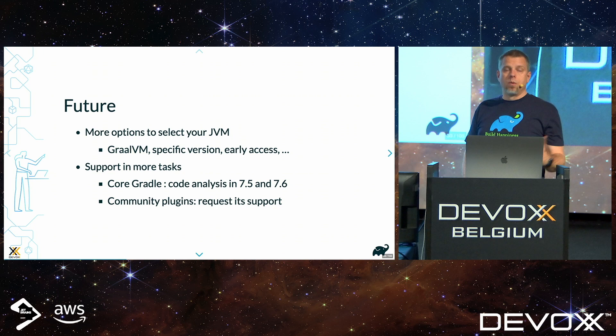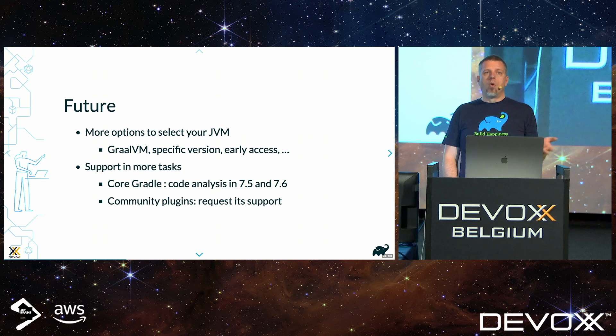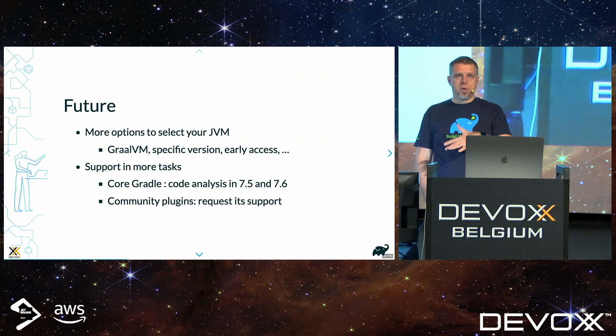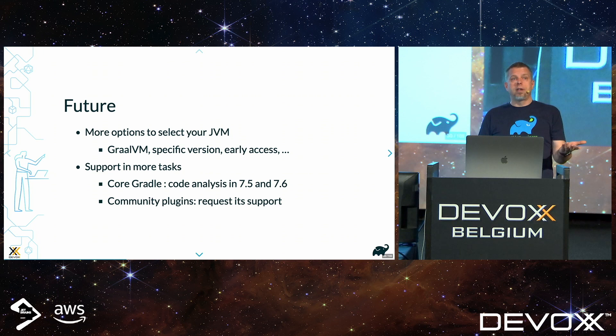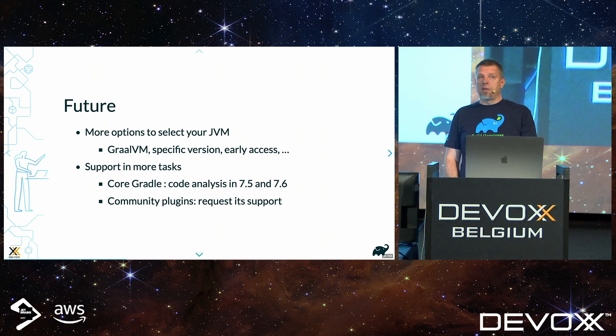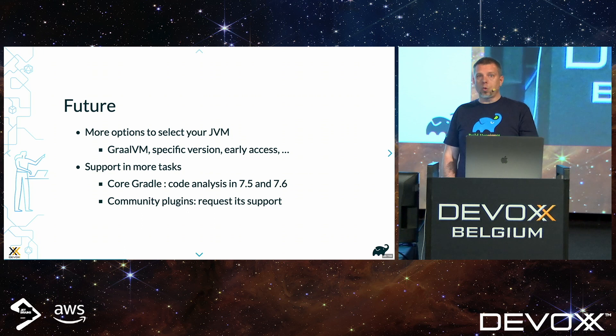In terms of the future: more vendor options. We're also looking at increasing toolchain support in tasks. For the core Gradle plugins we turned it on for CheckStyle in 7.5. We're turning it on for more code analysis core plugins in 7.6, to be released in the coming weeks. And a call to action: if you see a community plugin that needs to run a JVM process, please ask them to support toolchains and to honor what we do in the Java block — so that if you set the toolchain in the Java block, all tools provided by those plugins can be aligned on that version.